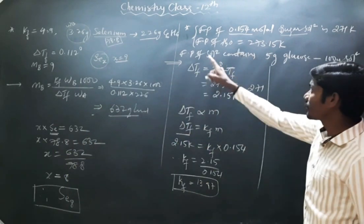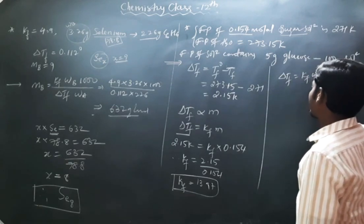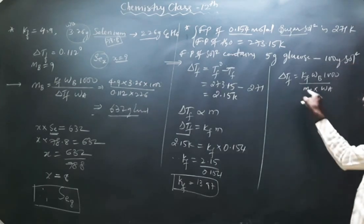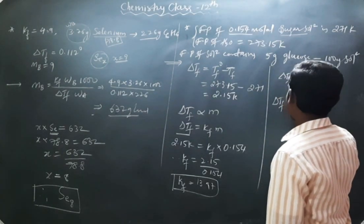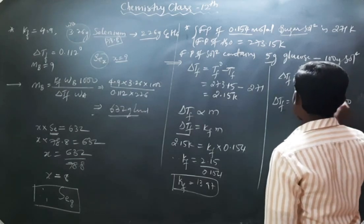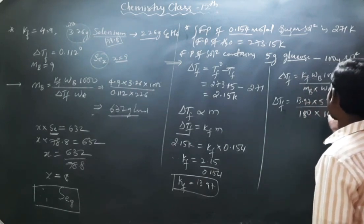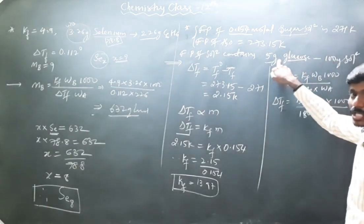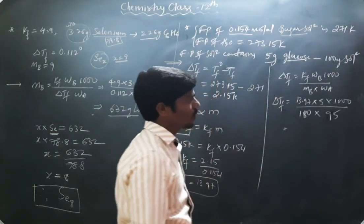Now calculate ΔTf for the glucose solution: ΔTf = Kf × WB × 1000 divided by MB × WA. Kf = 13.97, WB = 5 g, MB of glucose = 180. Since 100 g is solution, 5 g is solute, so 95 g is solvent. Substituting: ΔTf = 13.97 × 5 × 1000 divided by 180 × 95.